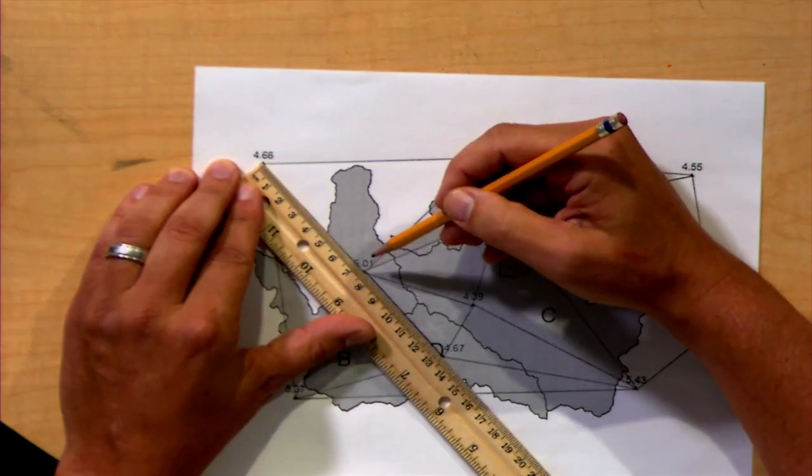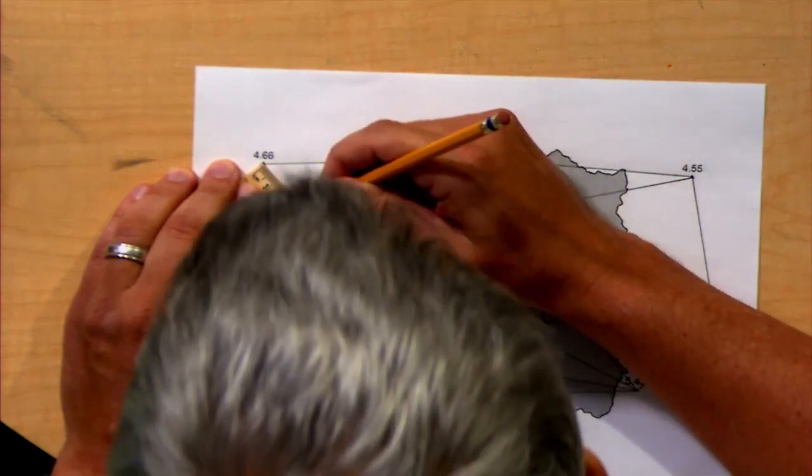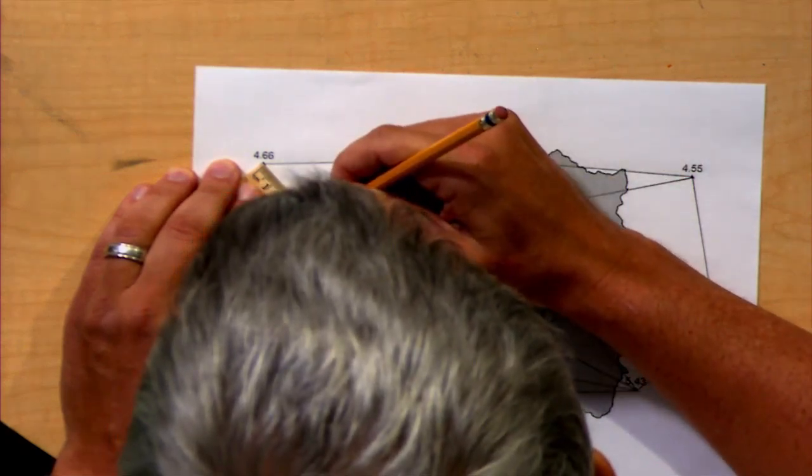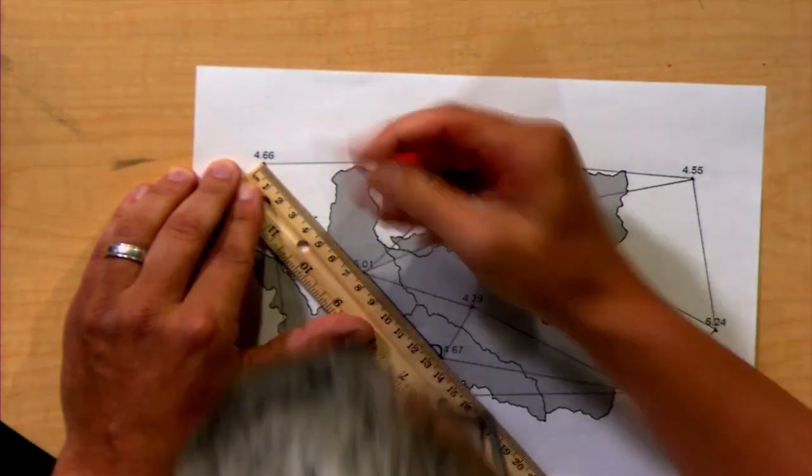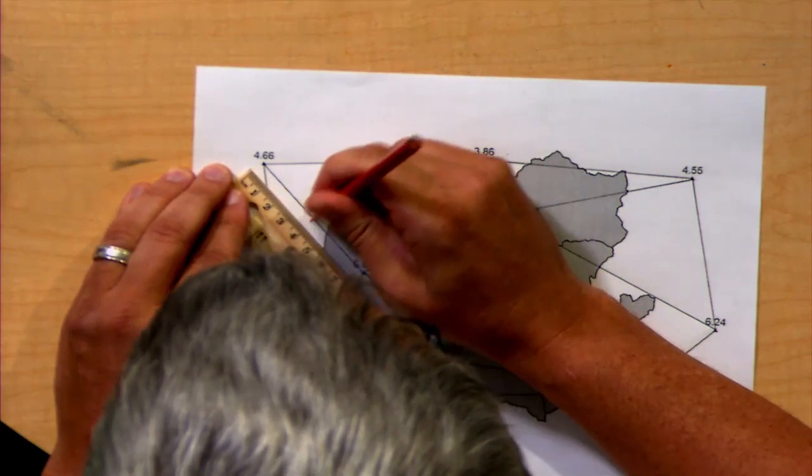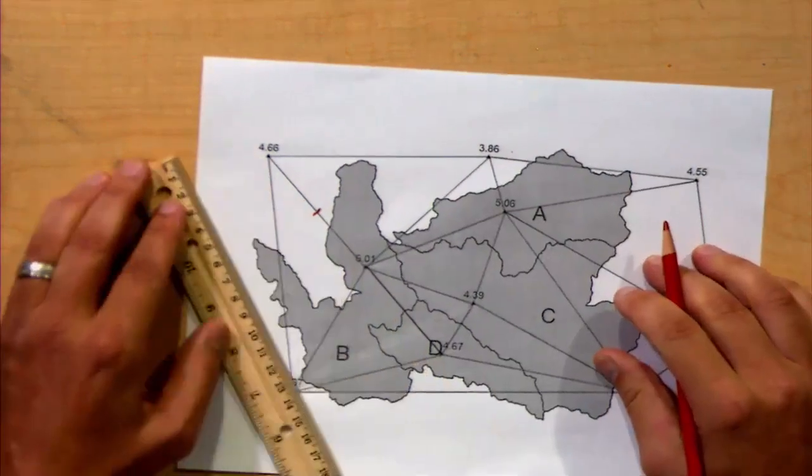Well, 7.4 centimeters divided by 2 is 3.7, so I can move along the line here to 3.7 centimeters, and I'm going to make a mark bisecting that particular point. And there's a mark halfway down that line.